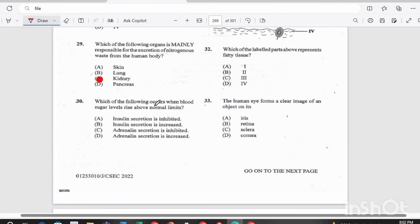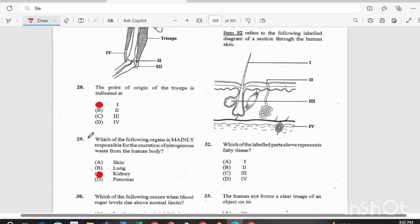Item 30. Which of the following occurs when blood sugar levels rise above normal limits? Is it A, insulin secretion is inhibited, and the word inhibited there means that it's not produced? B, insulin secretion is increased? C, adrenaline secretion is inhibited, or D, adrenaline secretion is increased? If you answered B, insulin secretion is increased, you are correct.